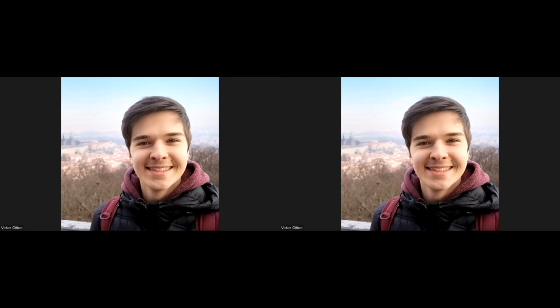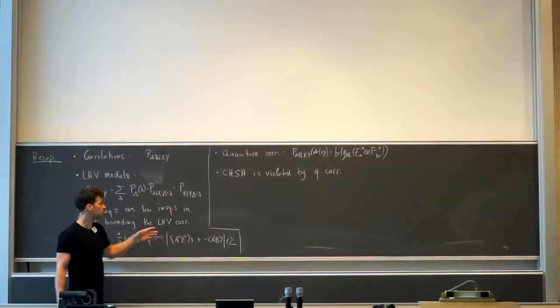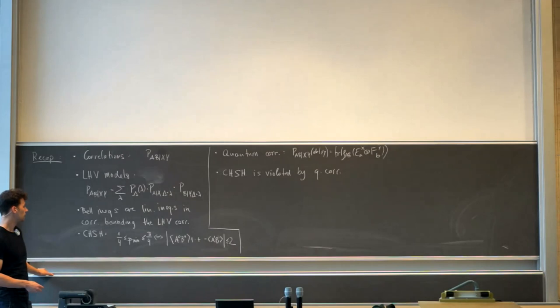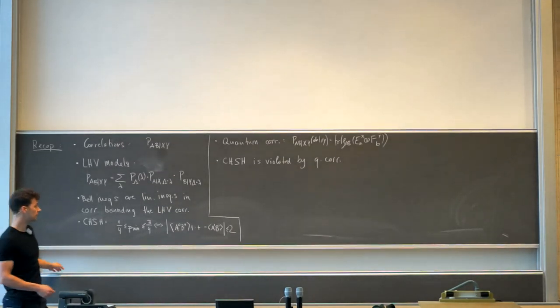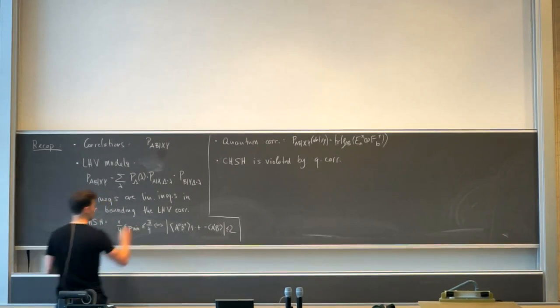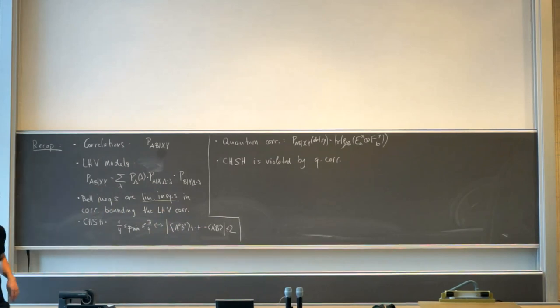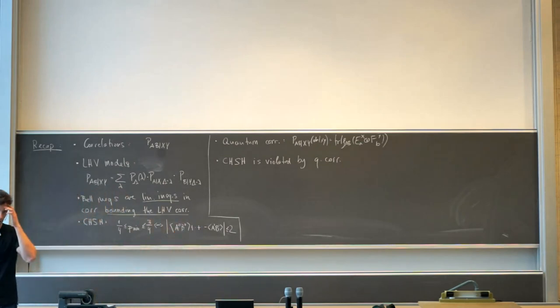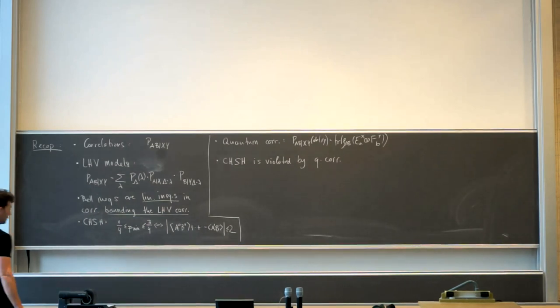We found how to characterize the most general classical type of model, which we call the local hidden variable model. These are models that allow for a representation of the conditional probability distribution in a specific form. Then we found some linear inequalities in these correlations — linear inequalities in P(ab|xy) that bound the local hidden variable correlations. We found one particular inequality, which was the CHSH inequality, the Clauser-Horne-Shimony-Holt inequality.